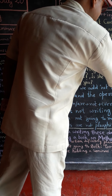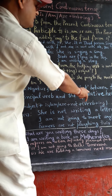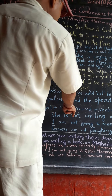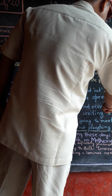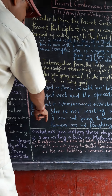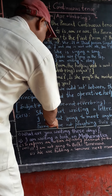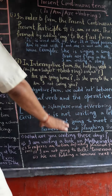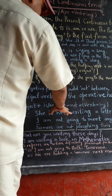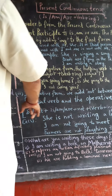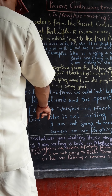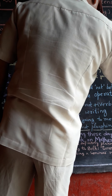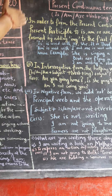In negative form, we add 'not' between the helping verb and the main verb. The structure will be: Subject + is/am/are + not + verb + ing + object. For example: 'She is not writing a letter', 'I am not going to meet anybody', 'Farmers are not ploughing these fields.' This is the case of the negative sentence.